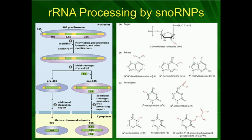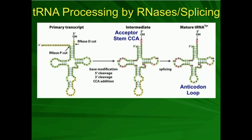In summary, there is no splicing in ribosomal RNA processing. We do cut certain parts out, but it's not true splicing. We also have methylation and modification of bases into so-called funny bases. In the next video, we'll cover tRNA processing, which is actually more complicated than either mRNA or rRNA processing, though somewhat underappreciated. Make sure to join us in the next video where we start talking about tRNA processing.